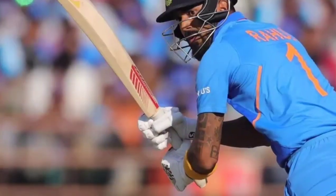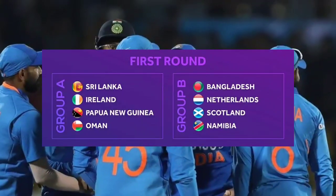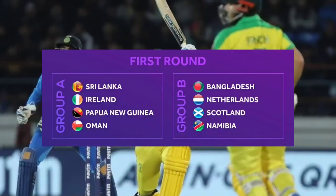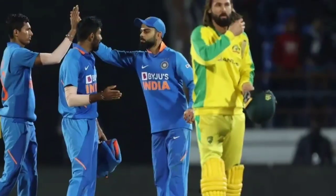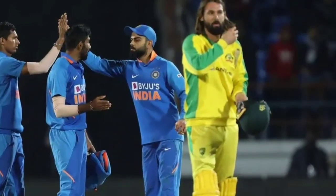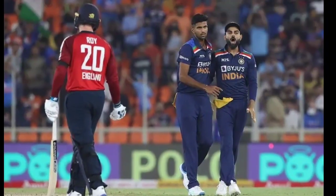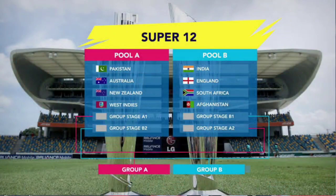Now let's get to the main topic. You can see a picture on your screen showing two groups, each with four teams. This is the first round, where the top two teams from each group will qualify. They will advance to the Super 12, which is the main ICC Men's T20 World Cup stage featuring a total of 12 teams.